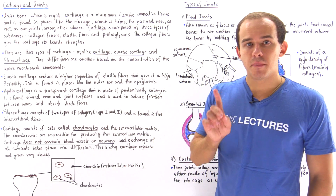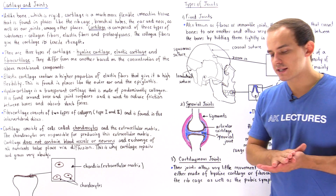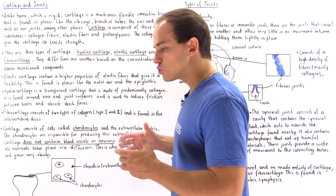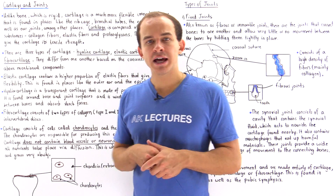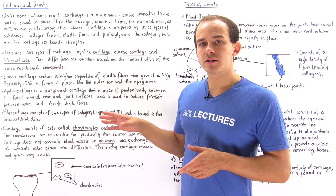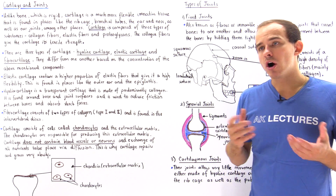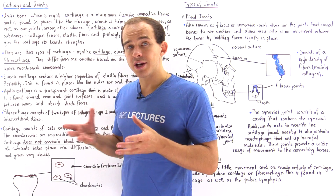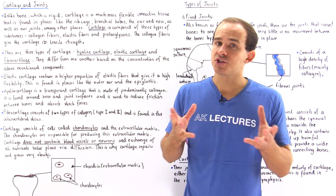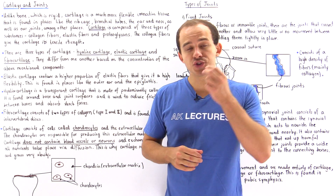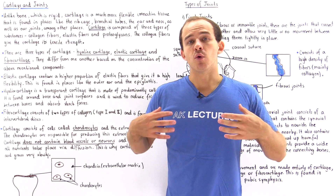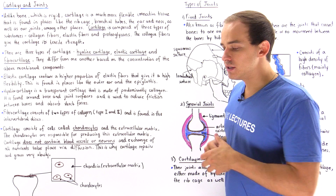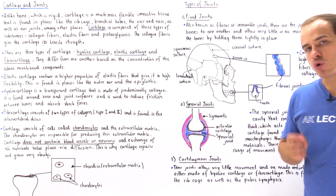Bone is a very strong but very rigid type of connective tissue. Another type of connective tissue that is also strong but much more flexible is known as cartilage, and that's exactly why cartilage is found in regions of our body that require a greater degree of flexibility, such as our nose, our outer ear, our bronchial tubes inside our lungs, our ribcage, our trachea, the epiglottis, as well as our joints.